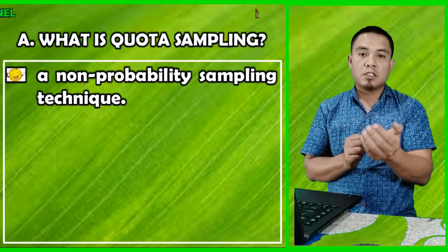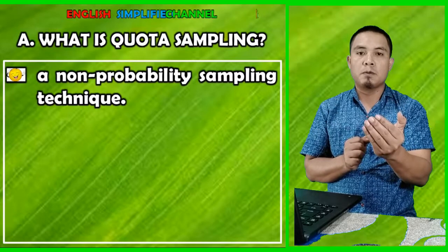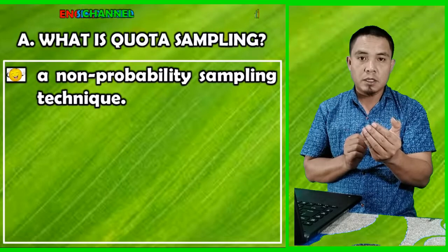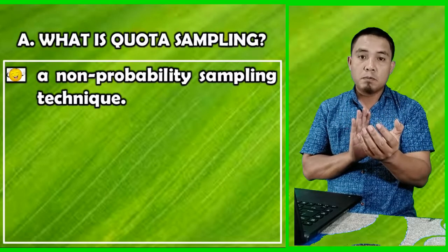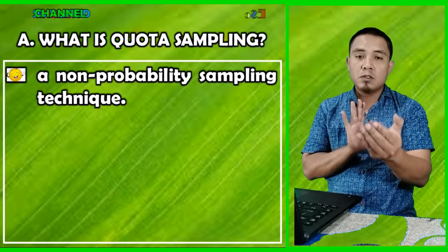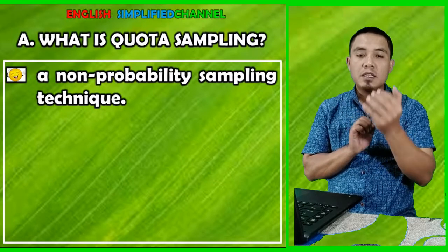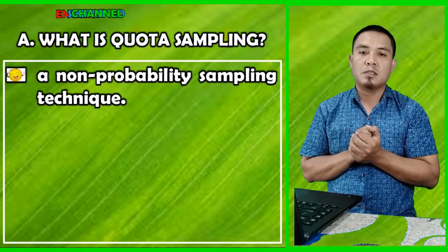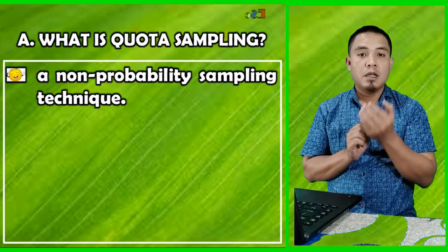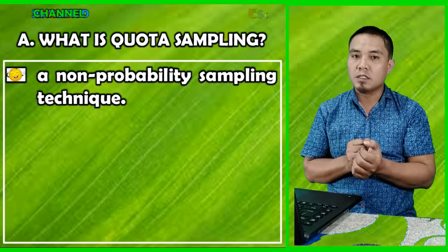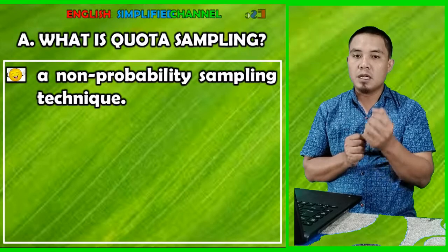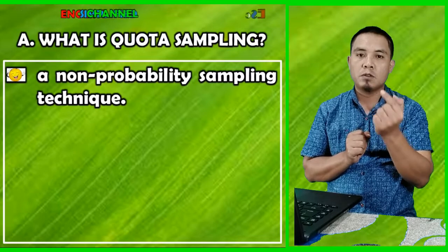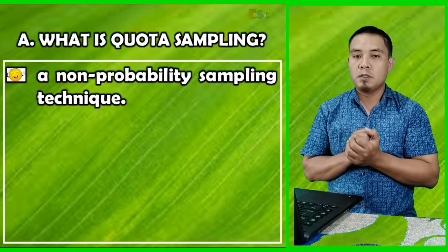Quota sampling is one type of non-probability sampling. Non-probability sampling means the members of the population do not have an equal chance to be included as the sample of a research. They don't have equal chance to be included — that is the key point when we talk about non-probability sampling.